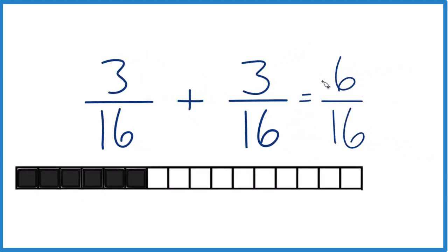But since these are even numbers, let's just cut them in half. Six divided by two is 3. 16 divided by two is 8. So we end up with 3 eighths. So 3 sixteenths plus 3 sixteenths is 3 eighths.